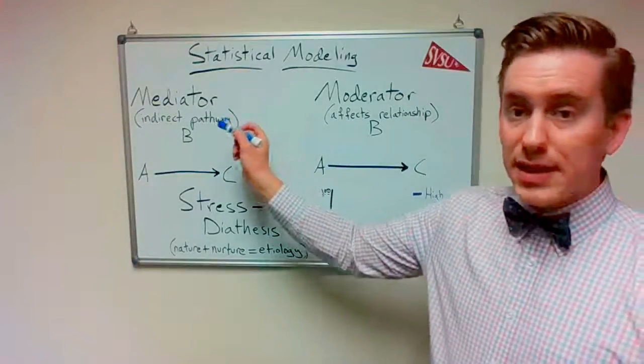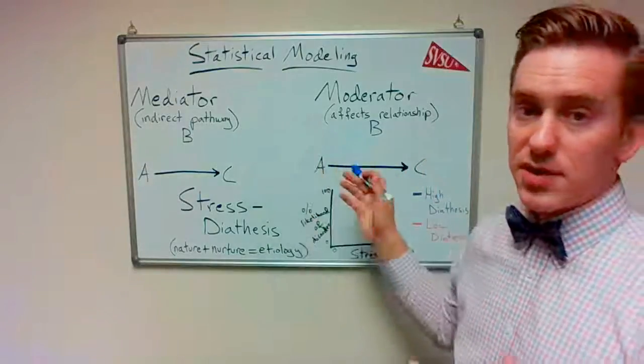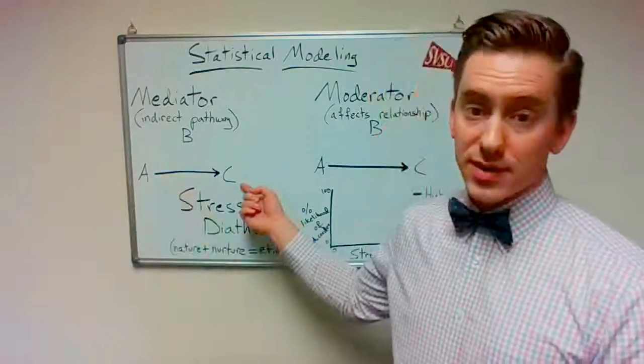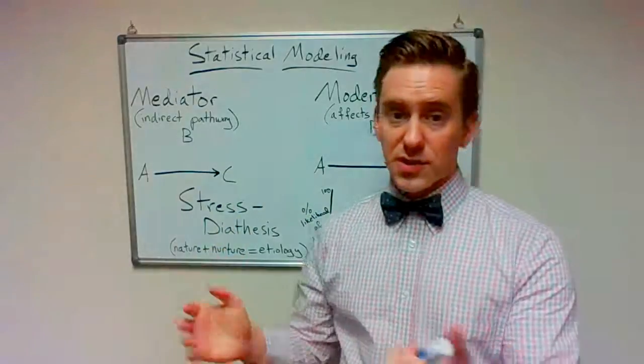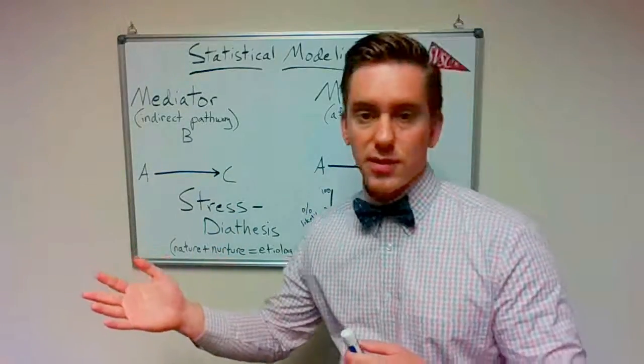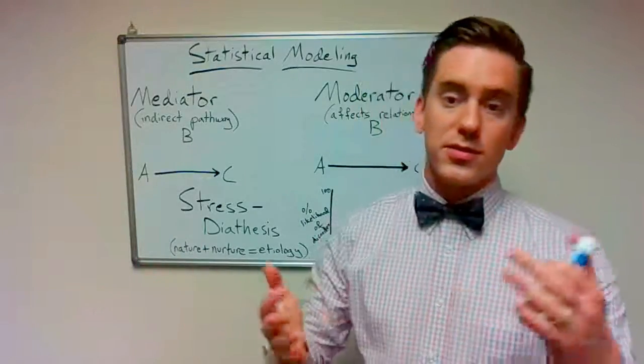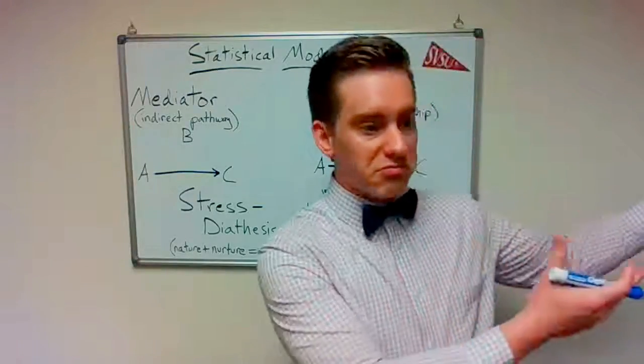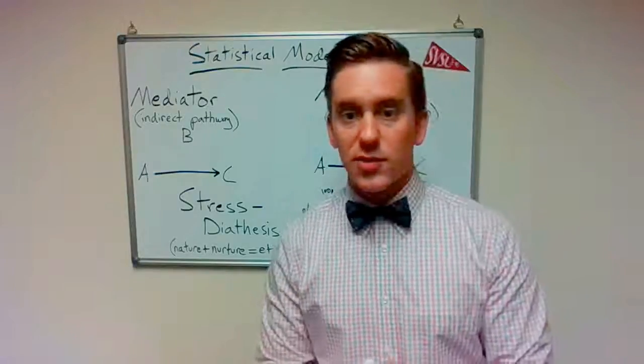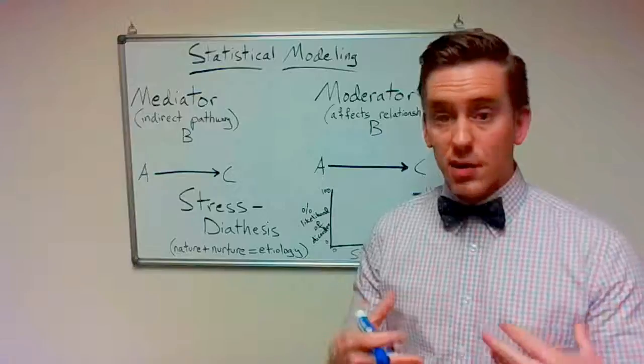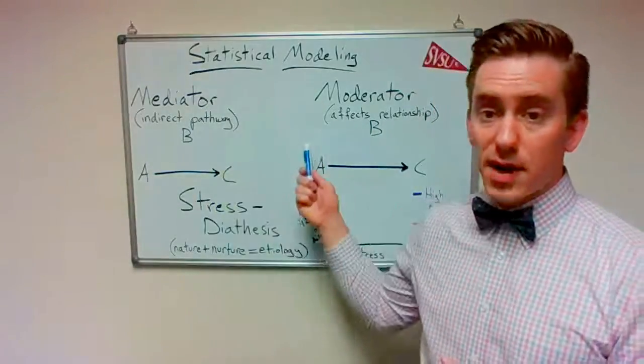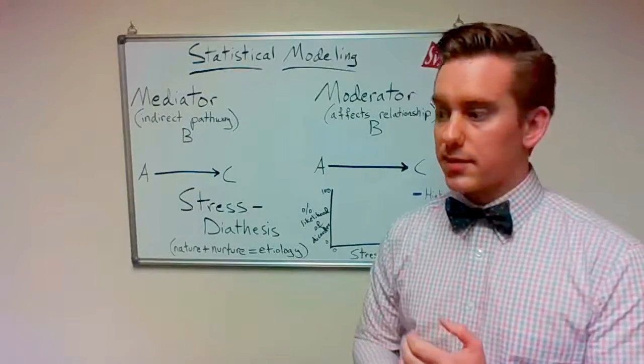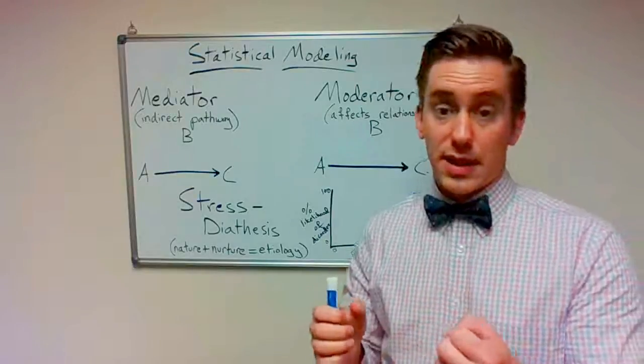A mediator model and a moderator model, actually, they both share something in common, which is that they start with a correlation between an independent variable and a dependent variable. This can be all sorts of things, that stress is related to disordered outcomes, that trauma is related to symptoms, that child sexual abuse is correlated to poorer outcomes later in life. There's many different things in abnormal psychology where the research is clear that there are links, but what mediators and moderators do is help us explain in more detail how and why those links take place and give us a better grasp on the mechanics of those relationships.